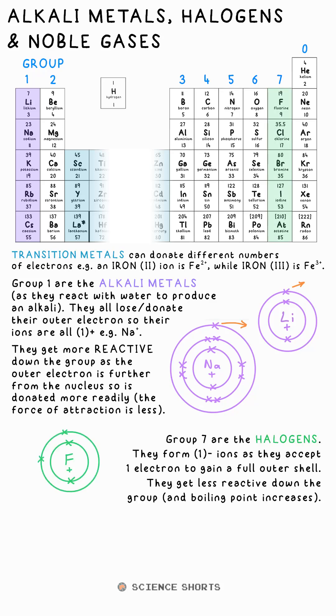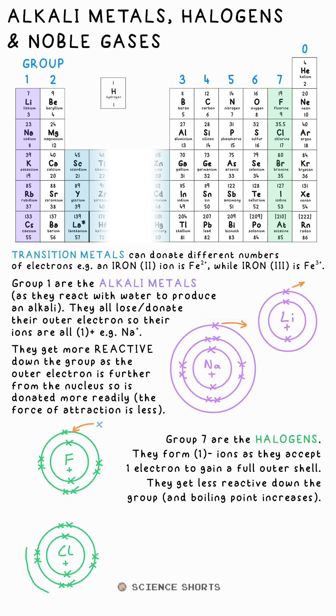Group seven are what we call the halogens. They're essentially the opposite. They have seven electrons in their outer shell, so they need one more to gain a full outer shell. They get less reactive down the group.